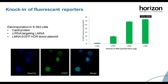For plasmid donors, we did an optimization experiment in K562 cells, which are known to have high efficiencies of HDR, to assess the amount of donor plasmid that gives best knock-in efficiencies. Electroporation of Cas9 protein and CRISPR RNA with increasing concentrations of a lamin-EGFP donor plasmid showed a correlating increase in EGFP expression, up to 32% as measured by flow cytometry. Images show the expected localization of EGFP expression in the nucleus, co-localized with a nuclear stain.